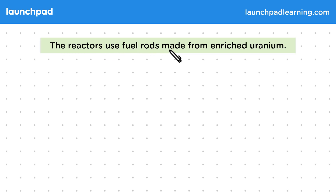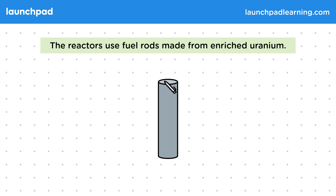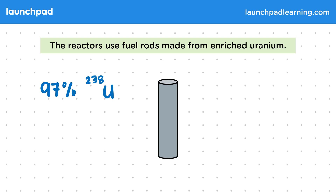The reactors use fuel rods made from enriched uranium. We use this long, thin shape since it has a large surface area, making it easy to absorb neutrons to start the fission reactions. Enriched uranium combines different isotopes of uranium in a certain proportion. For example, most fuel rods are made with 97% uranium-238 and 3% uranium-235. You won't be expected to remember these isotopes or proportions for an exam.